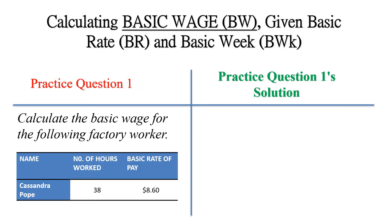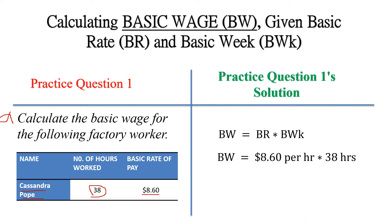Here is a practice question. Calculate the basic wage for the following factory worker. We have Cassandra Pope. She works a 38-hour week at a basic rate of $8.06. A basic wage would be $8.60 times 38 — the per-hour units cancel — and $8.60 times 38 gives us $326.80. So that is Cassandra's basic wage for the week.